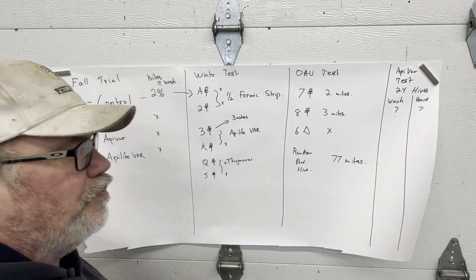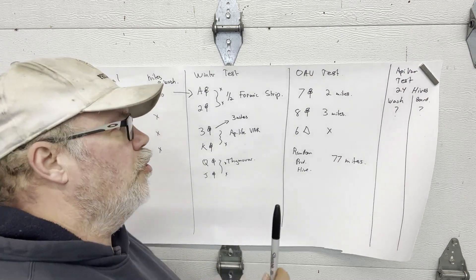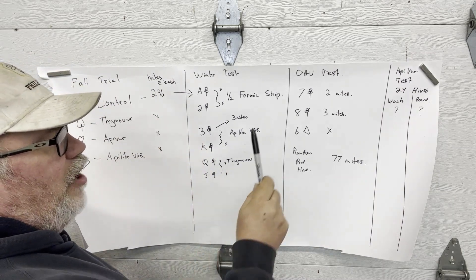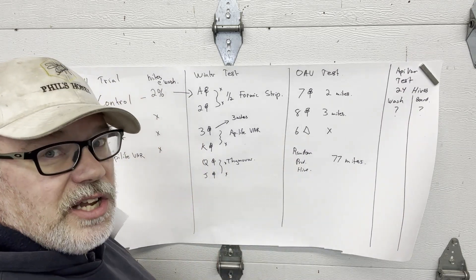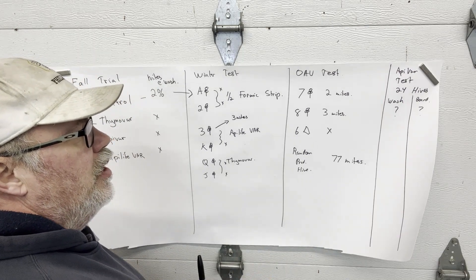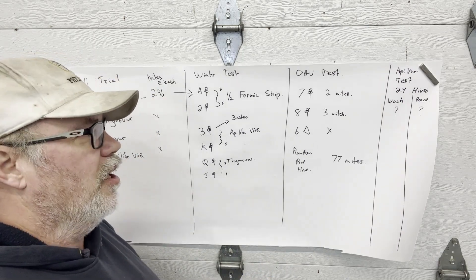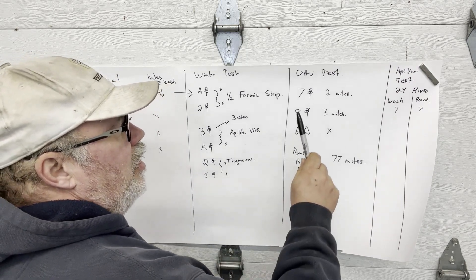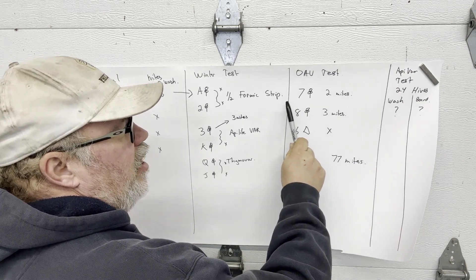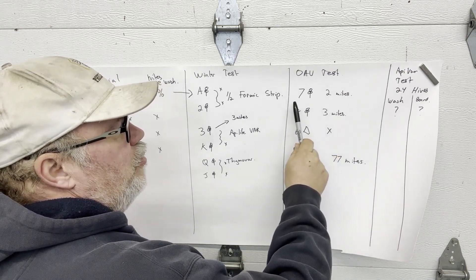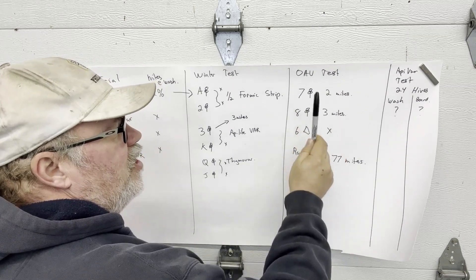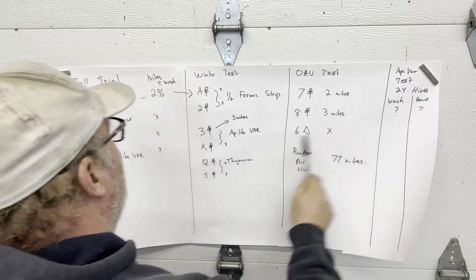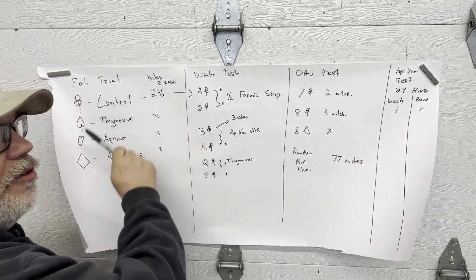We also took some more hives from this fall trial and we did an OAV test. My neighbor brought over his homemade oxalic acid vaporizer and we did four hives. After I think it was four days, we found two mites in the seven of clubs, eight mites in the three of clubs, no mites in the diamonds. Now that all kind of agrees with what we thought we'd expect here.